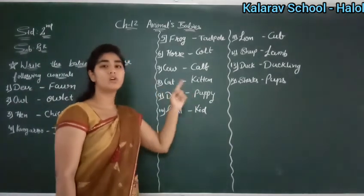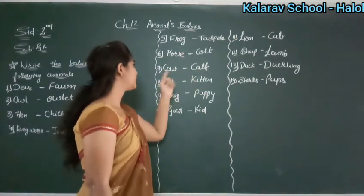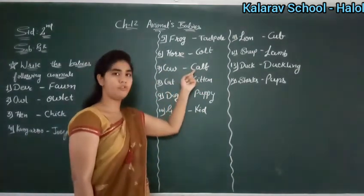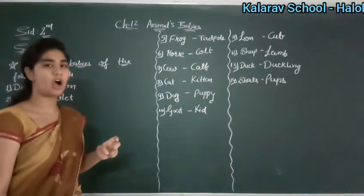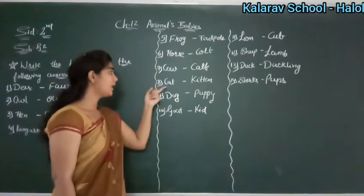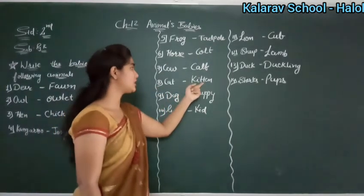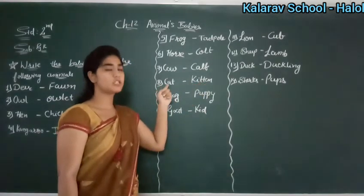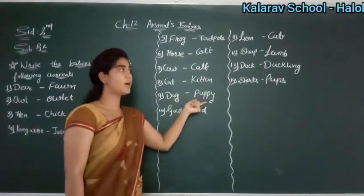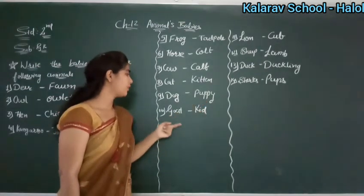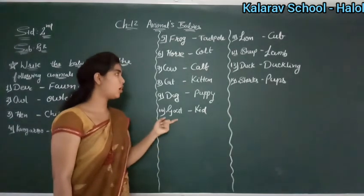Horse — colt. C-O-L-T. Colt. Cow — calf. What is the spelling of calf? C-A-L-F. Calf. Next is cat — kitten. K-I-T-T-E-N. Kitten. Cat — kitten. Dog — puppy. P-U-P-P-Y. Puppy. Goat — kid. K-I-D. Goat — kid.